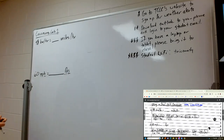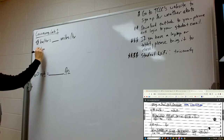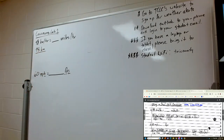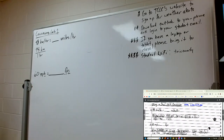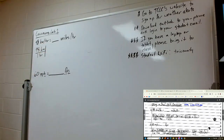The first example is 98 kilometers per hour into miles per hour. Start by setting up your unit fraction: 98 kilometers in the top, and since it's a rate, one hour goes in the bottom. With a rate conversion, the trick is to take care of your top unit first, then come back for the bottom one if necessary. Let's go to the conversion chart: one kilometer equals 0.621 miles.